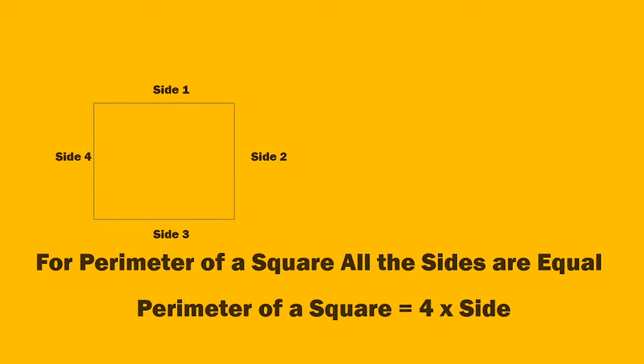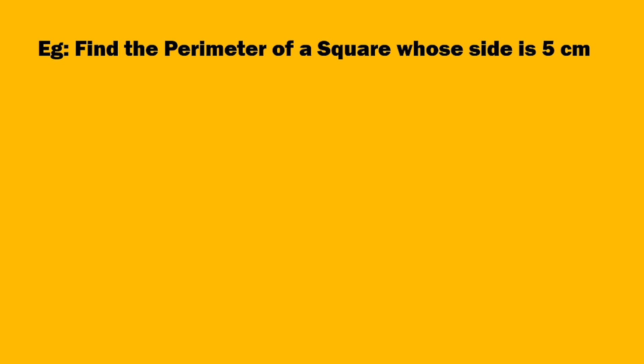So four multiply by side. Let us go for an example: find the parameter of a square whose side is five centimeters. First, what we have to do — we need to draw a square. Once you draw a square, name the sides.